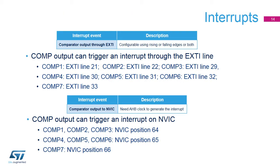The comparator can trigger an interrupt on the rising, falling, or both edges of the comparator output through the EXTI line. This is required to exit stop modes. The output can also be connected to the CPU's nested vectored interrupt controller (NVIC).